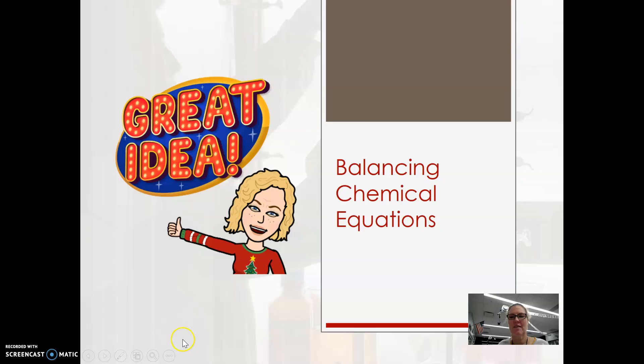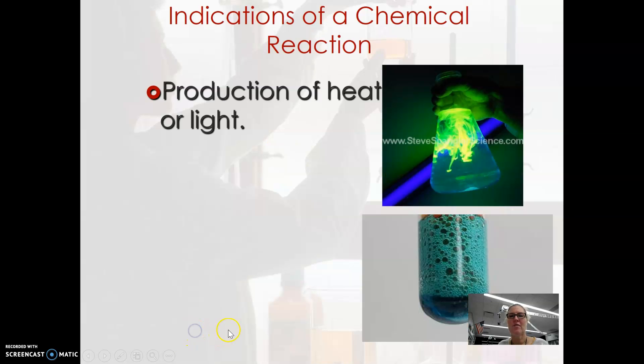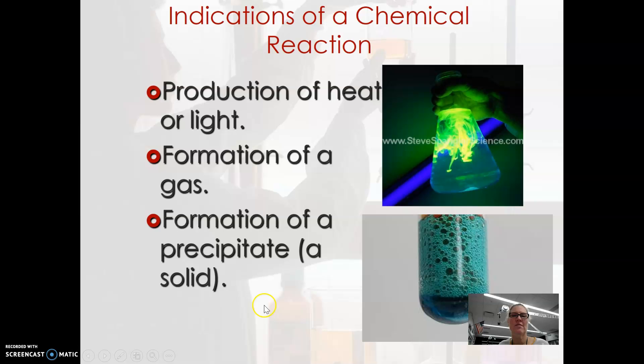So let's do some. First of all, chemical changes and chemical reactions have certain indications that they are occurring—things like light and heat, formation of solids. These are all indications that a chemical reaction has occurred, of course color change as well.